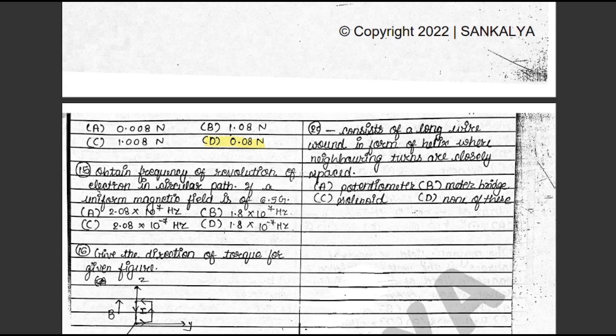Question 15: Obtain the frequency of revolution of an electron in a circular path if a uniform magnetic field is 6.5 Gauss. The answer is B: 1.8 × 10⁷ Hz. This is in the textbook exercise 12.